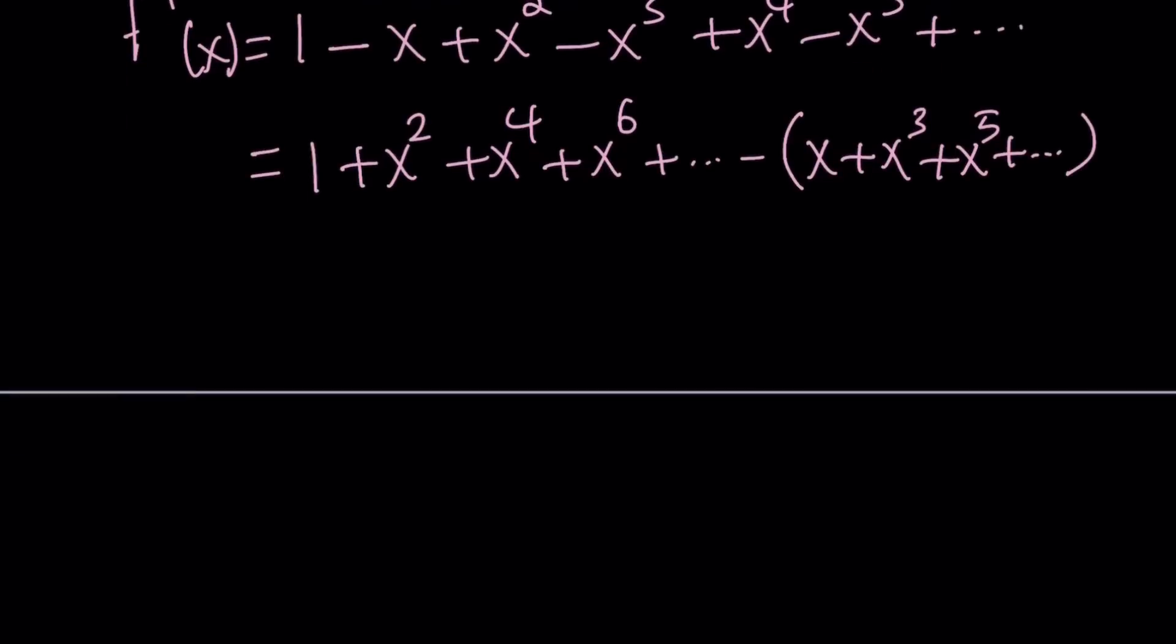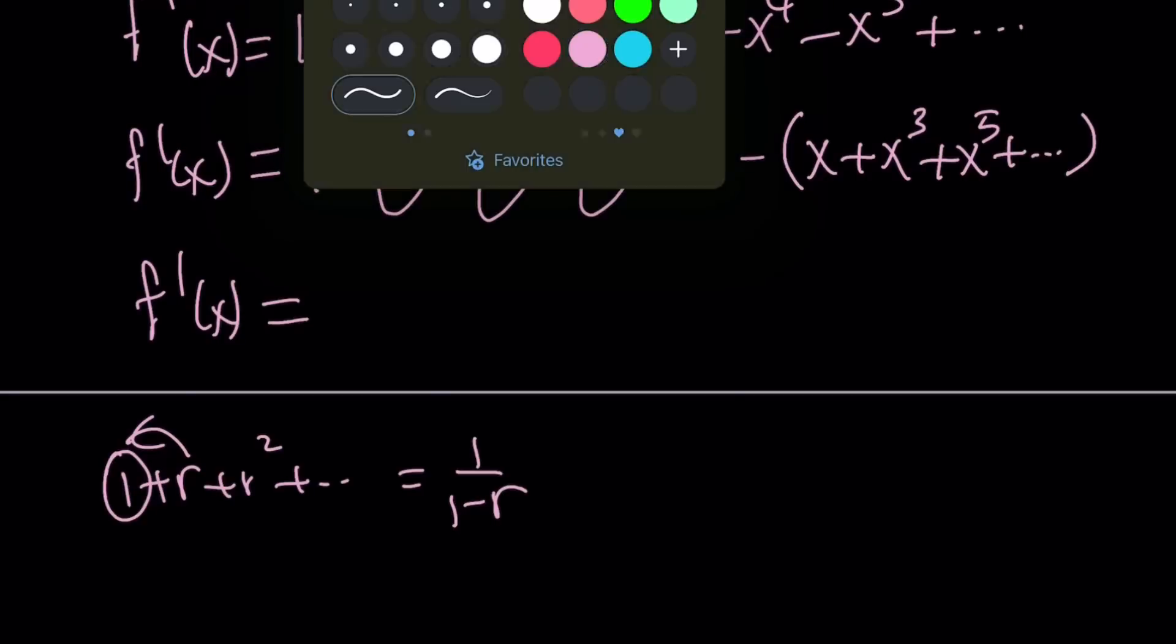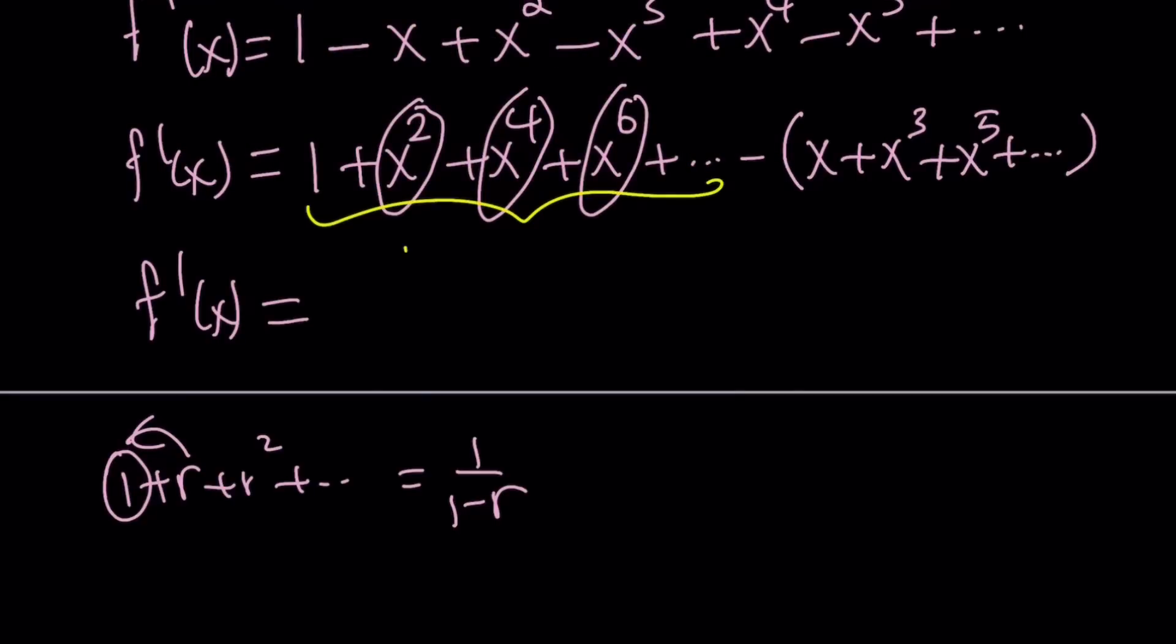So this is f prime of x, and let's evaluate this using the formula for geometric series. If you remember, the formula for 1 plus r plus r squared is equal to 1 over 1 minus r. If the first term is 1 and the common ratio is r, this is equivalent to 1 over 1 minus r. But in this case, the common ratio is x squared. So the first part of this is going to be equal to 1 over 1 minus x squared.